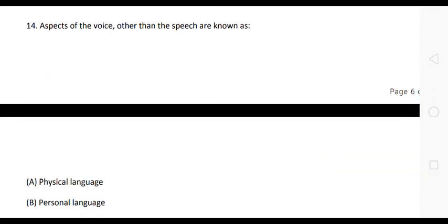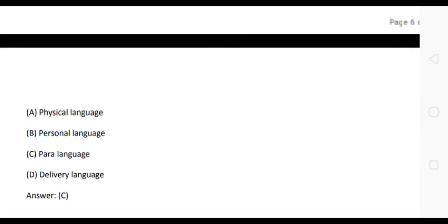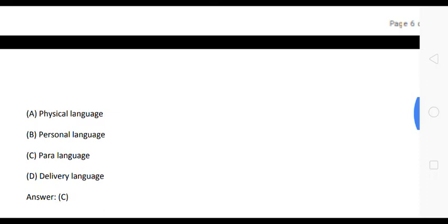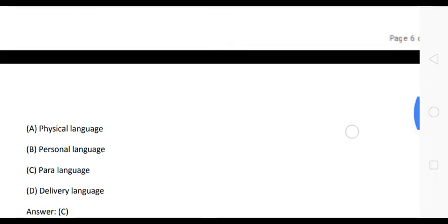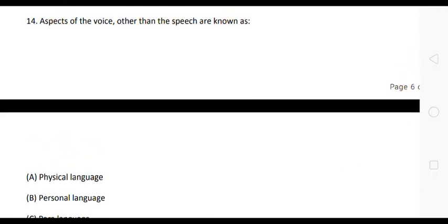The next question is: aspects of the voice other than speech are known as — Option A: physical language. Option B: personal language. Option C: para language. Option D: delivery language. The correct answer is Option C: para language. Aspects of the voice other than speech are known as para language.